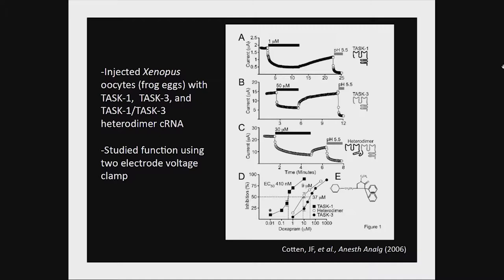To test this hypothesis — work published in 2006 from Spencer Yost's lab at UCSF — we injected Xenopus oocytes with cRNA from TASK1, TASK3, or the TASK1-3 heterodimer and studied their function using the two-electrode voltage clamp technique. With application of 150–300 micromolar doxapram, there was a reversible inhibition of these channels, and all channels were inhibited by acidic pH. Concentration-response analysis yielded an IC50 of about 400 nanomolar for TASK1, and 9 and 37 micromolar for TASK3 and the heterodimer.